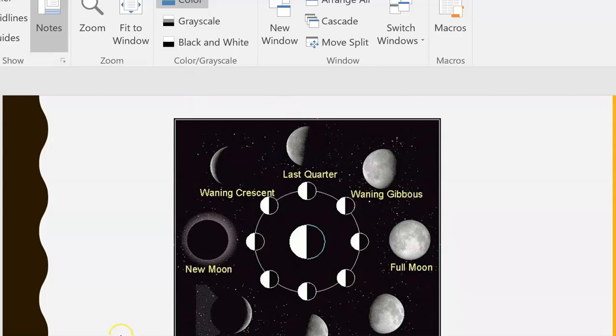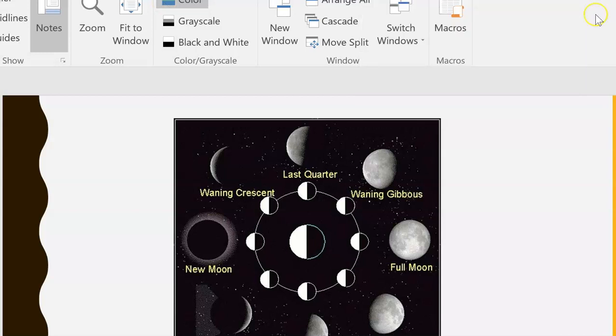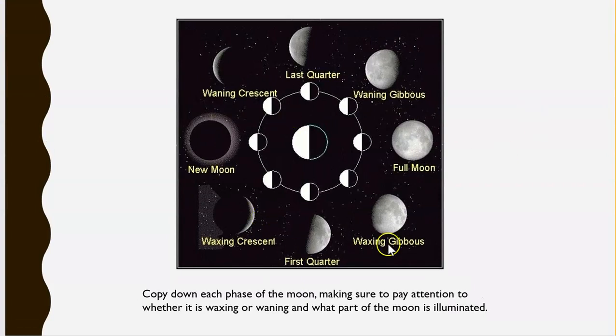I'm going to ask you to go ahead and copy down the labels and diagram so you've got them for your notes. I'm going to move this over here so you guys can see a little bit better. There you go. Go ahead and copy down the labels as well as the diagram, paying attention to whether it's waxing or waning and whether the right side of the illustration or the left side is illuminated, because that's what's going to give you that hint.